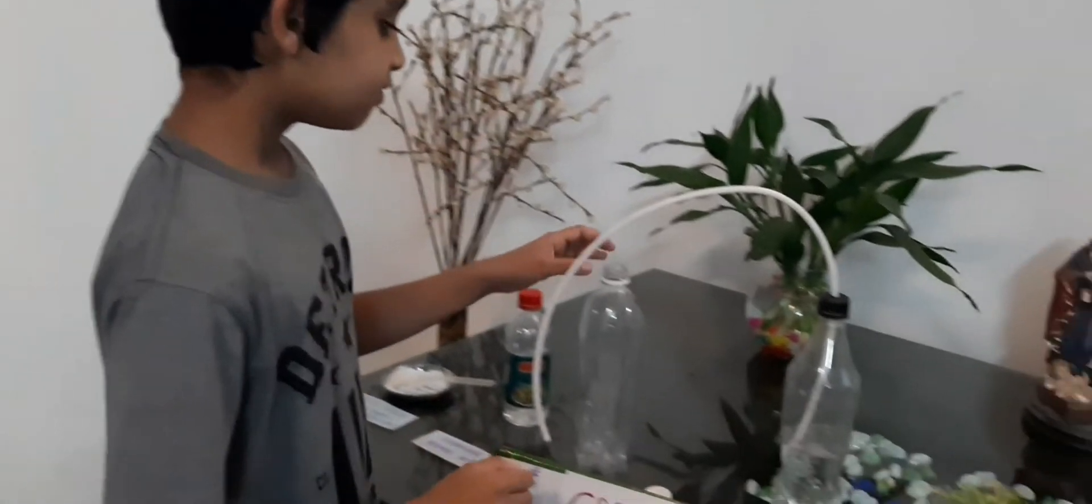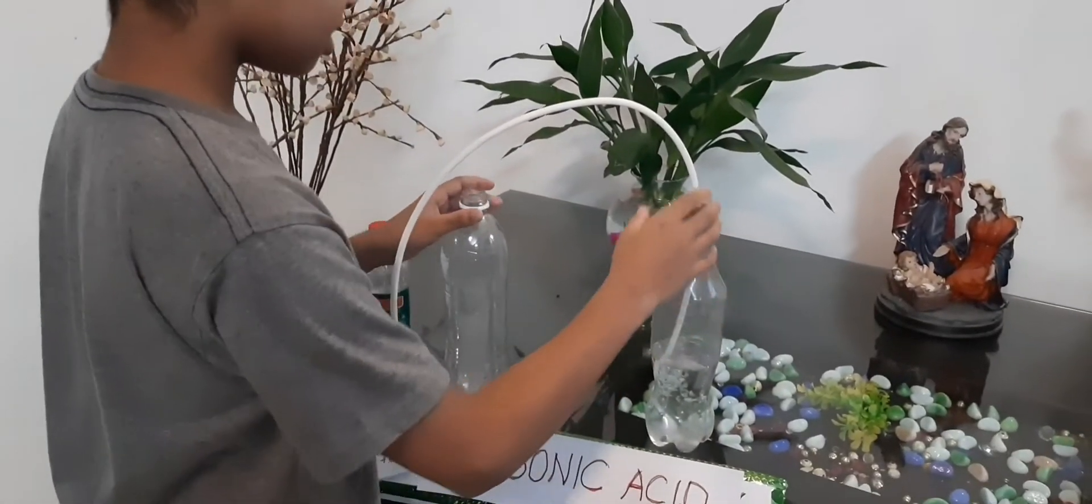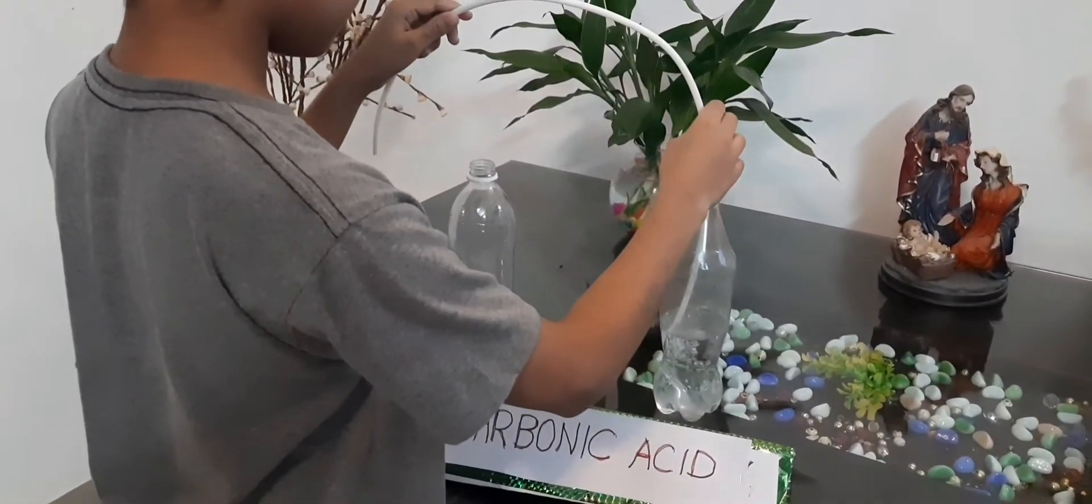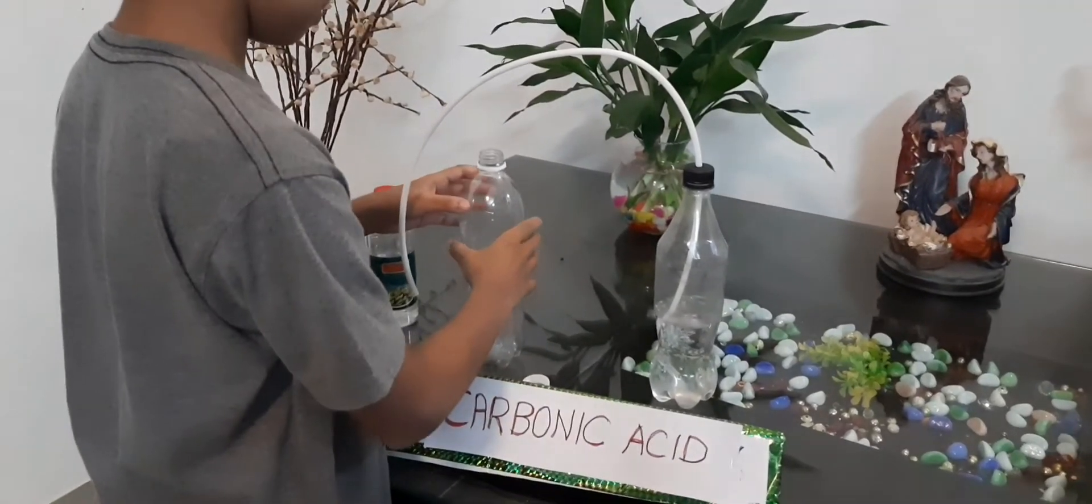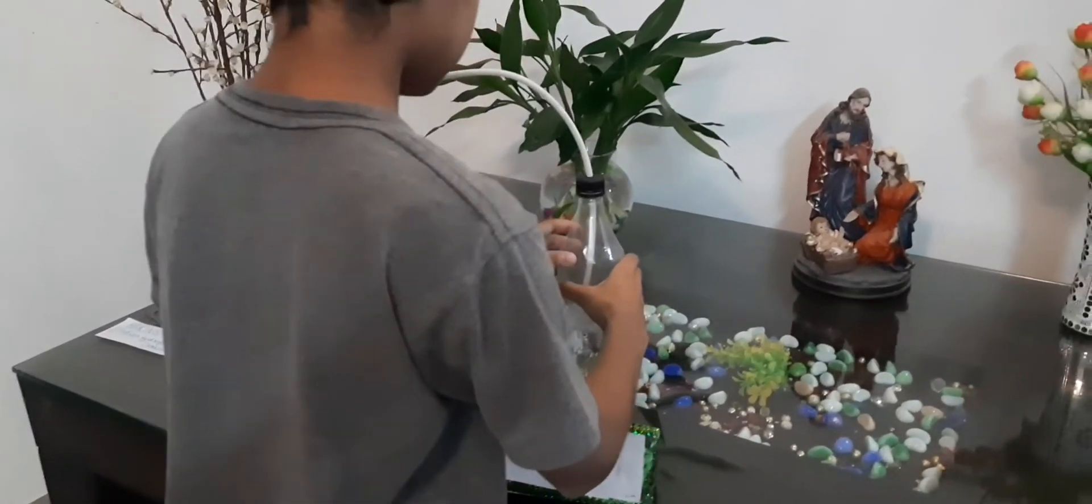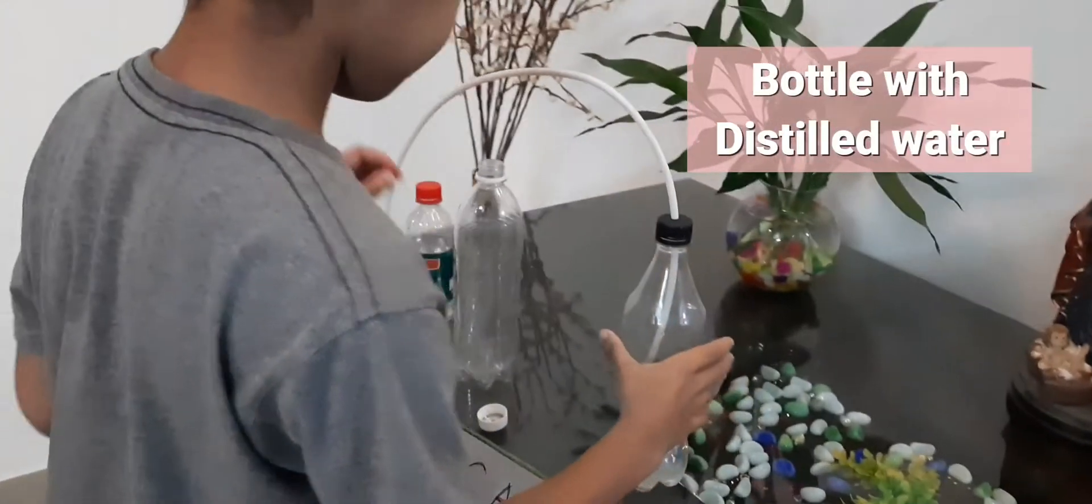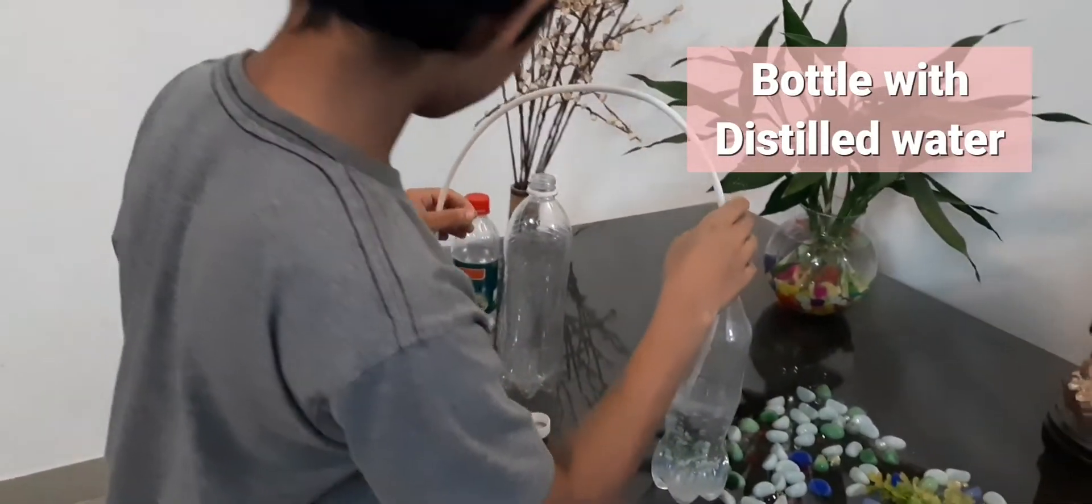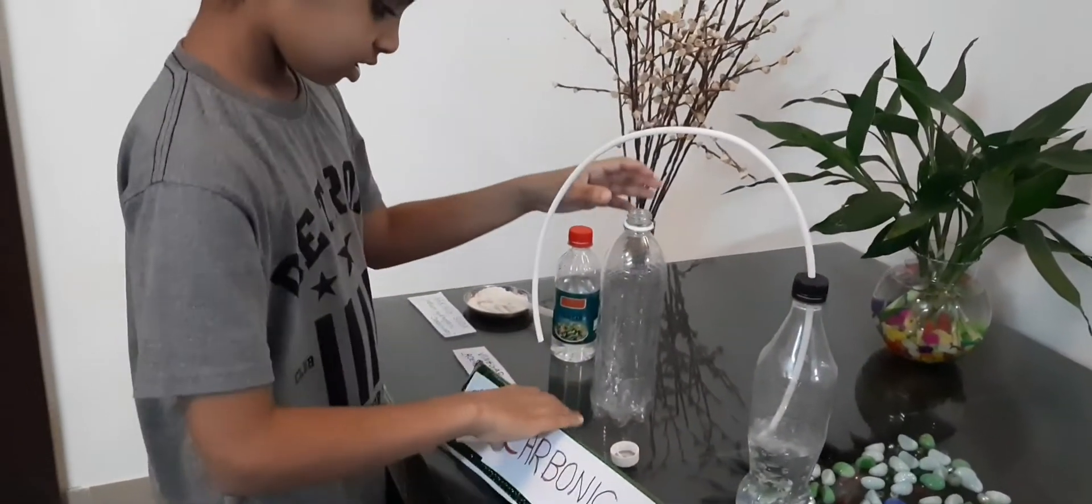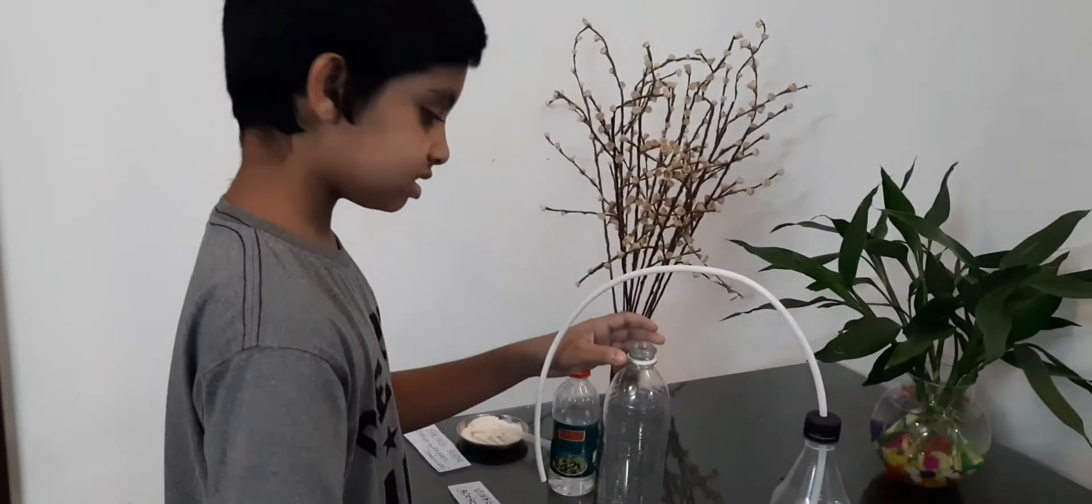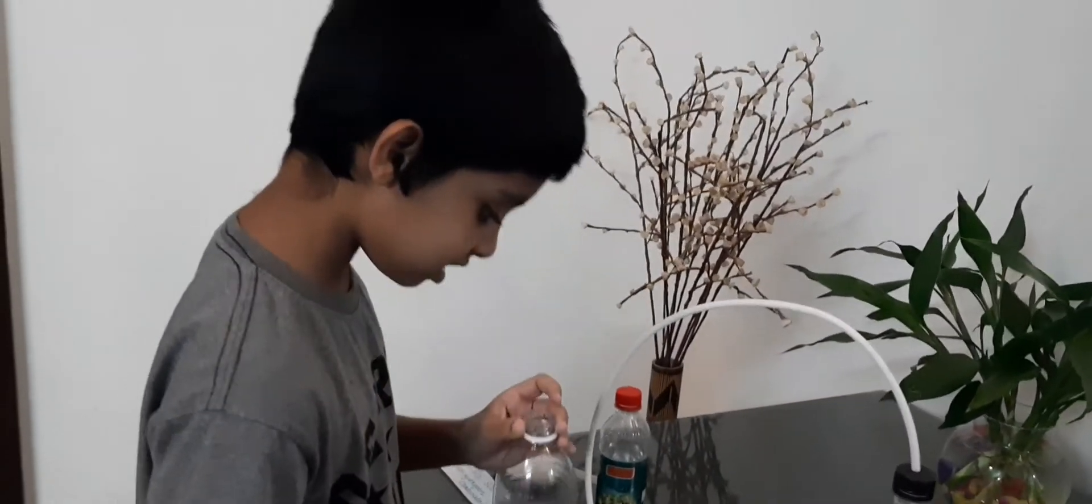Then we need two bottles and a tube. One of the bottles should be empty. The other bottle should be filled with distilled water. The tube will connect both bottles. Now we will see how the experiment is done.